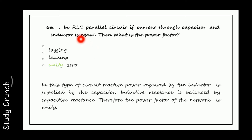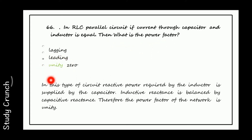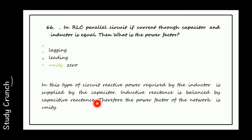Next, in an RLC parallel circuit, if the current through the capacitor and inductor is equal, what is the power factor? It will be unity power factor. The reactive power required by the inductor is supplied by the capacitor; inductive reactance is balanced by capacitive reactance, so the power factor of the network is unity.